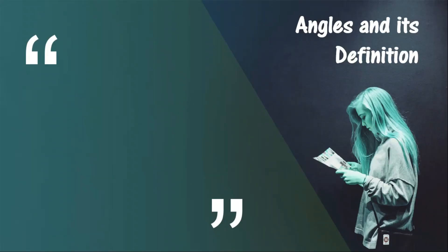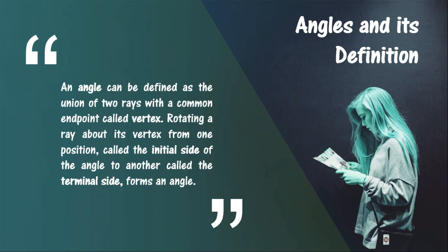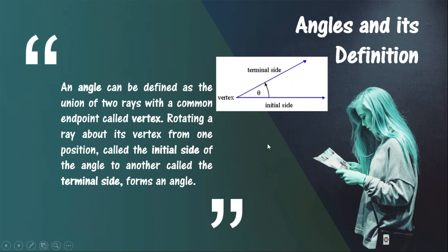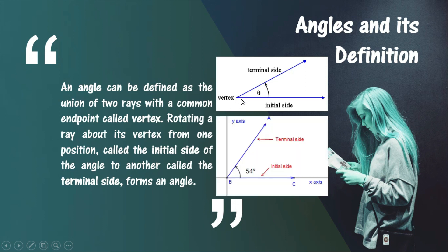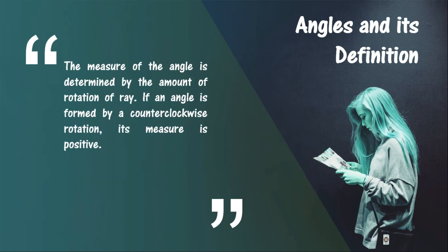It is very important for us to know what angles are and the things connected to them, because for the entirety of the course we will be dealing with angle measures. An angle can be defined as the union of two rays with a common endpoint called the vertex, as discussed during geometry. The measure of the angle is determined by the amount of rotation of the ray — the more rotations you have, the greater the measure of your angle is.